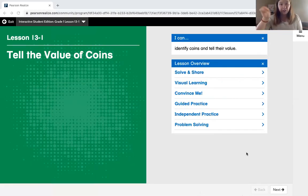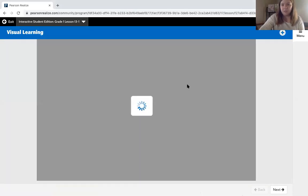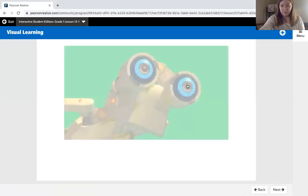Now you should see me up in your corner. Today you will be learning about how to tell the value of coins and your I can statement is I can identify coins and tell their value. We're going to watch your visual learning video first.